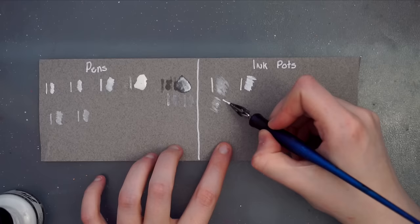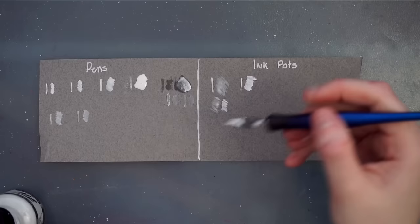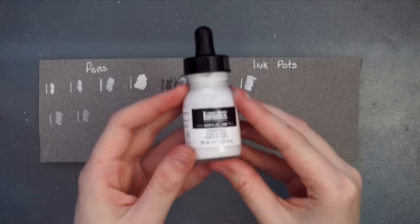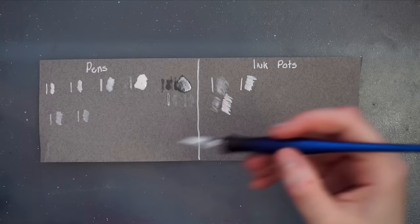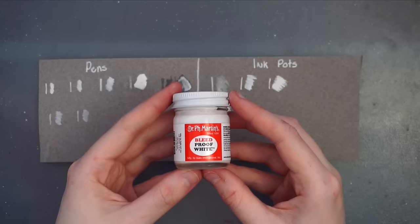When I did this Winsor & Newton swatch, I realized that I might not have shaken up the FW Acrylic Ink as well as I should have, so I went back, shook it up really well, and then did some more swatches underneath it just so that it was a more accurate representation of the ink. Next, we have the Liquitex Acrylic Ink. As is generally the case with acrylic inks, this one is nice and bold on the toned paper.